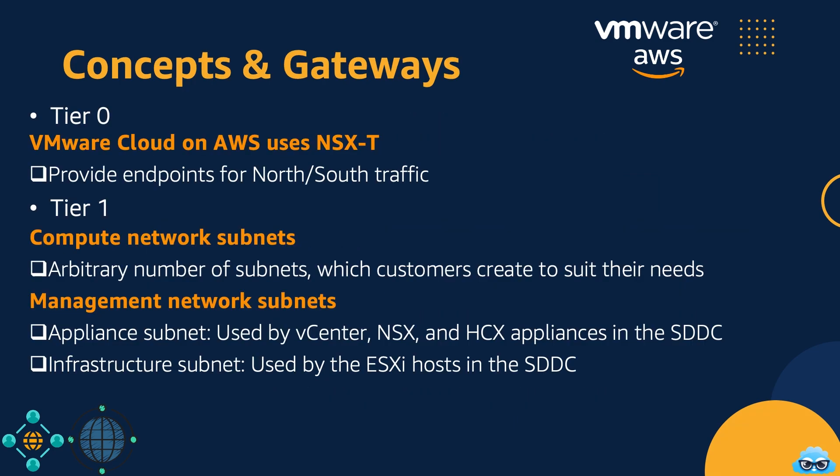In our network architecture, we have two crucial tiers of gateways and routers. The Tier 0 Gateway serves as the entry and exit point for the entire overlay network, handling north-south traffic and managing communication between the overlay networks and external networks. Tier 1 Gateways are the backbone for all overlay networks — whether management subnets or data subnets — facilitating inter-network communication within the VMware Cloud on AWS environment. These gateways play a pivotal role in ensuring efficient and controlled data flow, both internally and externally.